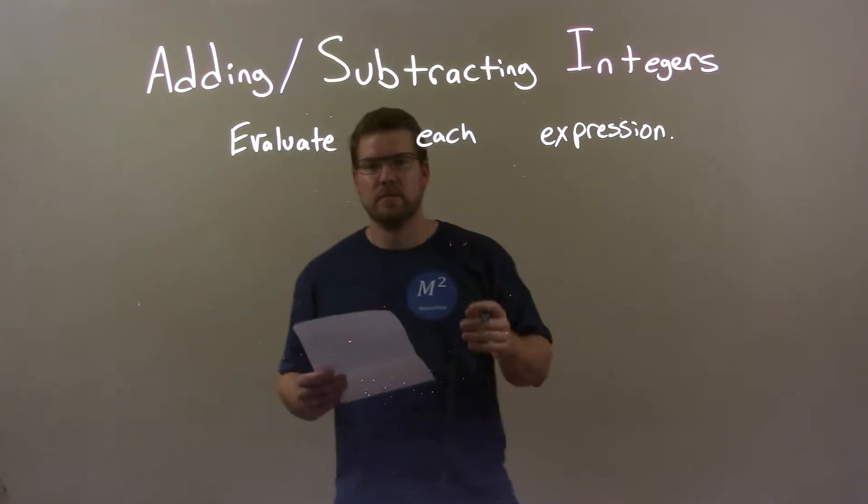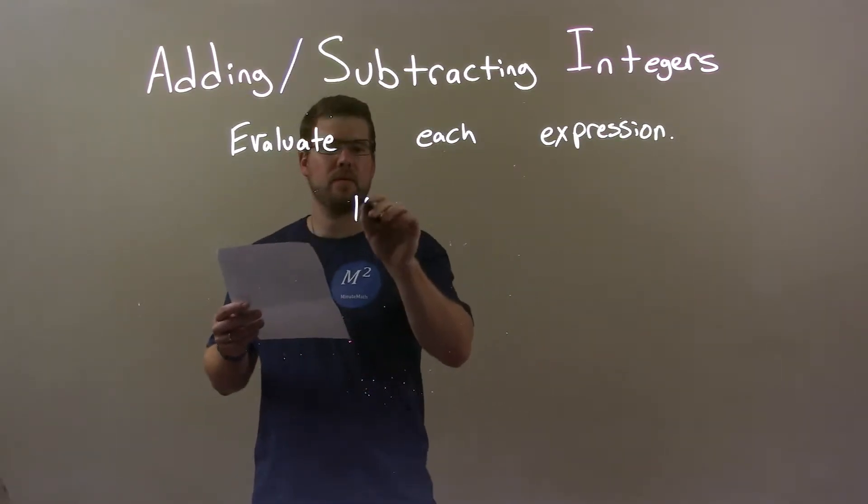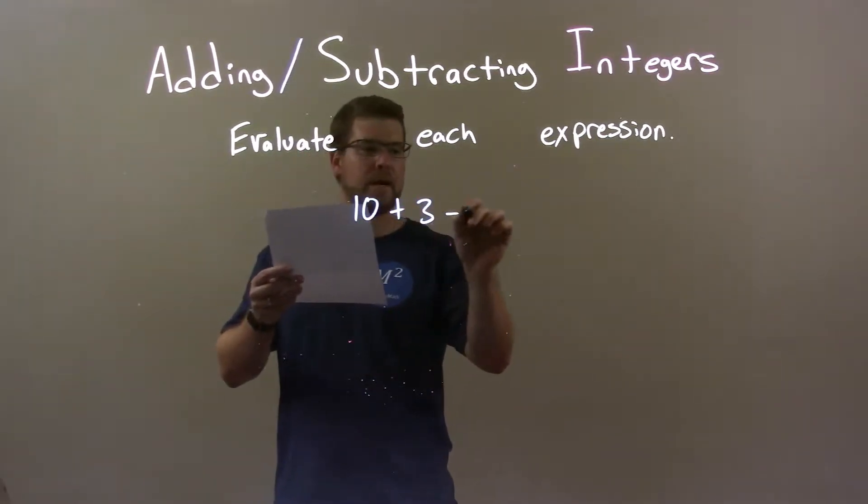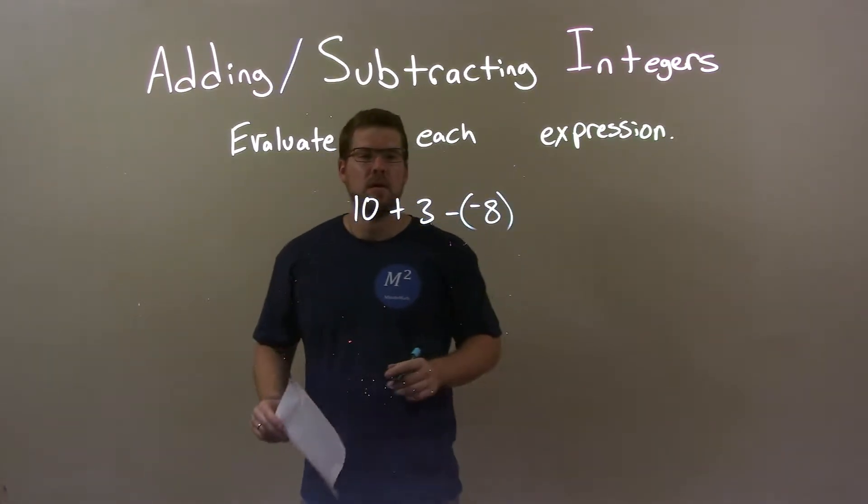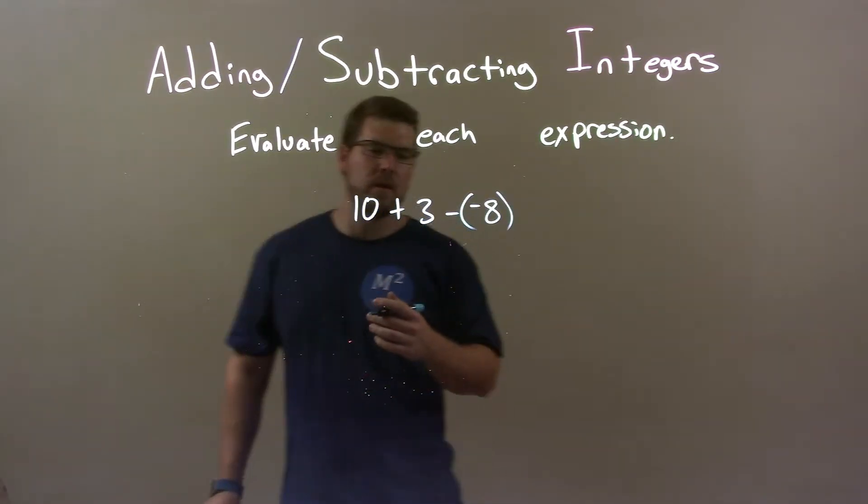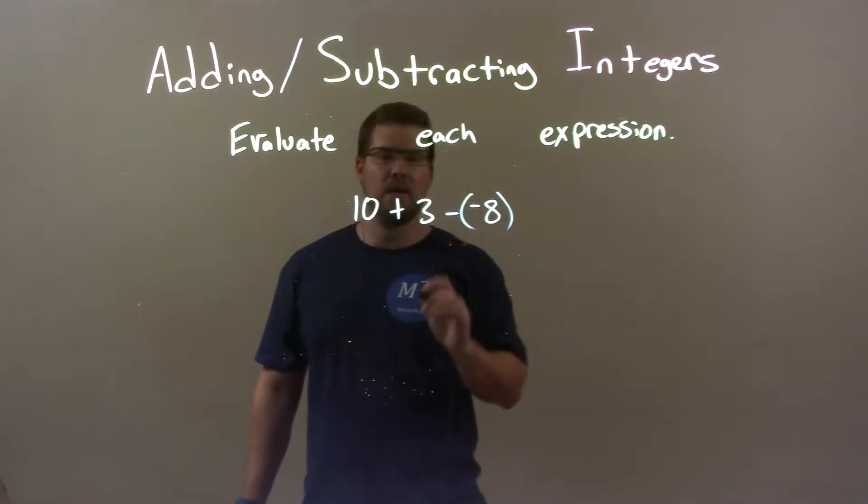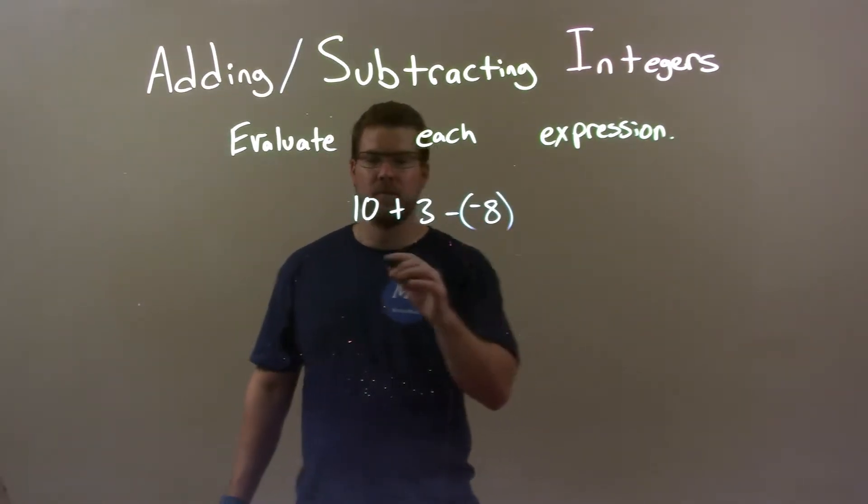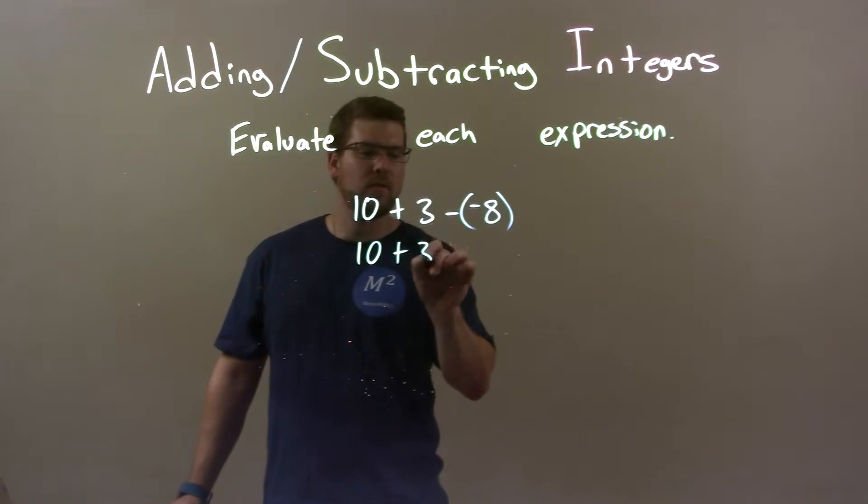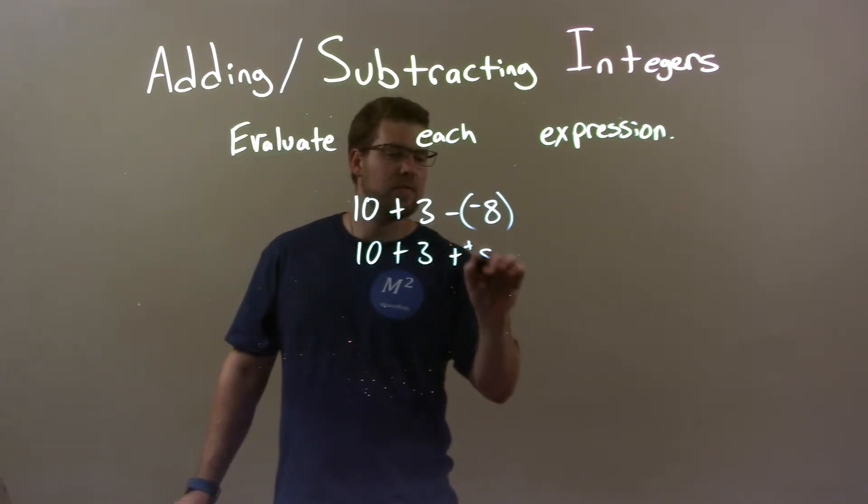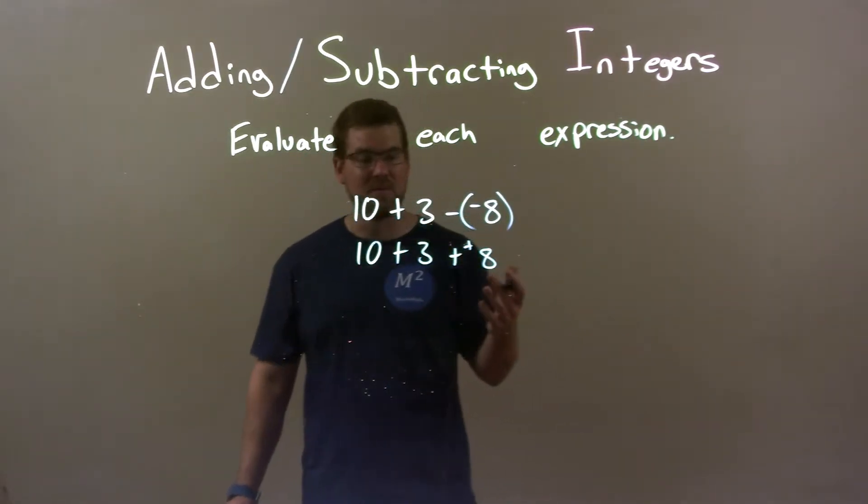So if I was given this expression, 10 plus 3 minus a negative 8. Well, first thing I'm going to do, I see that minus and negative is the same thing as adding a positive. So we have 10 plus 3 plus a positive 8. Now it's just addition across the board, so this one's pretty easy to do.